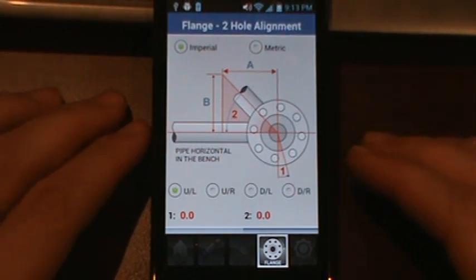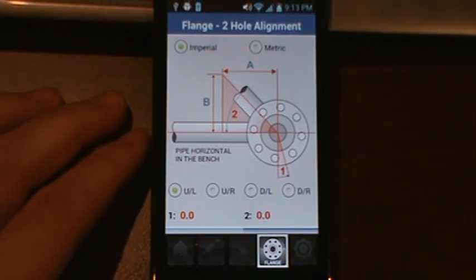Welcome everybody to the Pocket Pipe Calculator tutorial. Today we're going to cover the two hole alignment screen. This is an independent screen that you can find at the bottom of the main menu. You can also find a version of this inside of each of the calculations that give you the option of using flanges.